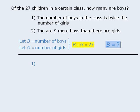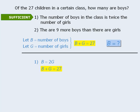Beginning with statement 1, we are told that the number of boys is twice the number of girls. So using the variables we assigned earlier, we can write that B is equal to 2 times G. Now does this provide enough information to answer the target question? Well, if we add to this the information we summarized earlier, we see that we have two equations. Since we could use these equations to solve for B, we know that statement 1 is sufficient.